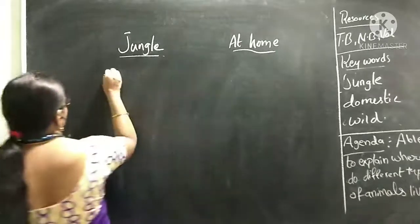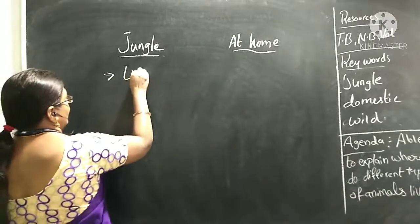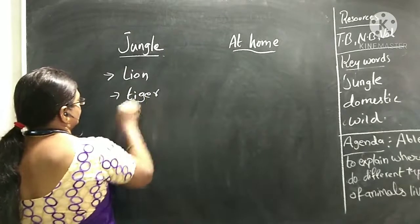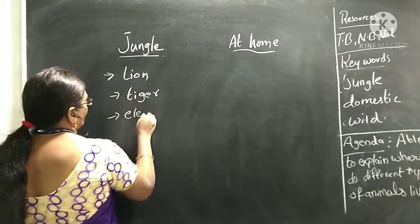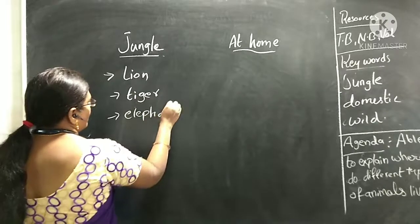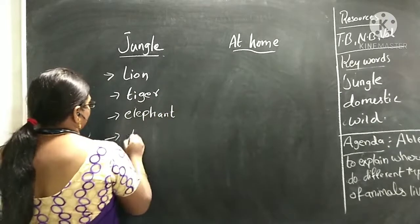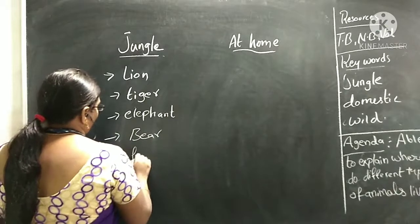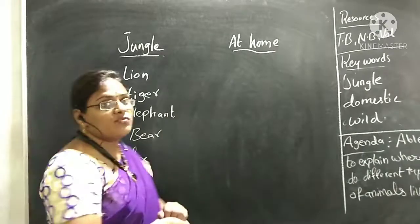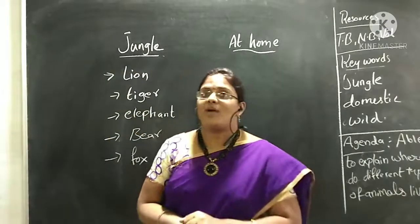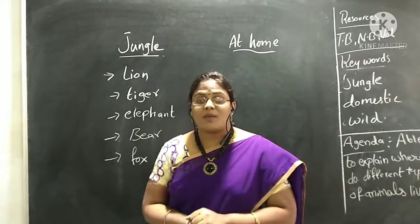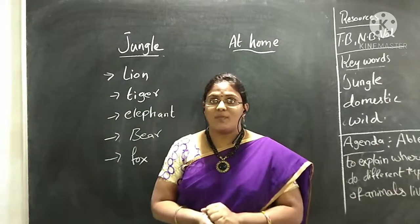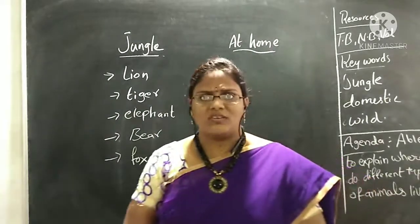For example, lion, tiger, elephant, bear, fox — all these types of animals live in the jungle. Because we cannot keep them near our home, and they won't be on the roadside either. They are harmful and dangerous to us.